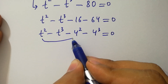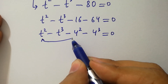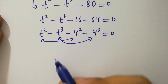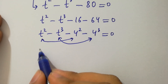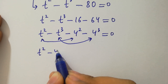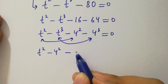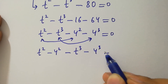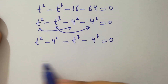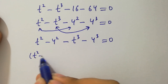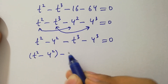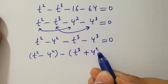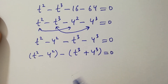You can see here t squared and 4 squared, and t cubed and 4 cubed. So we have here t squared minus 4 squared minus t cubed minus 4 cubed equal to 0.